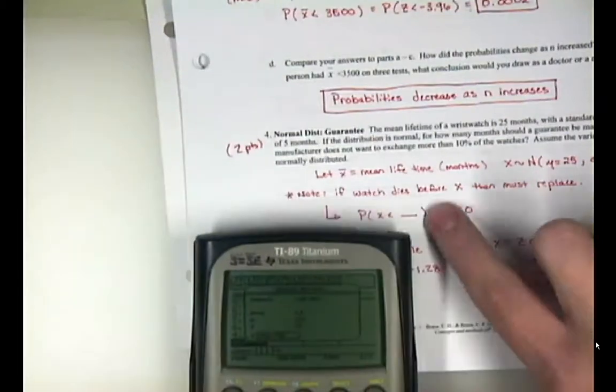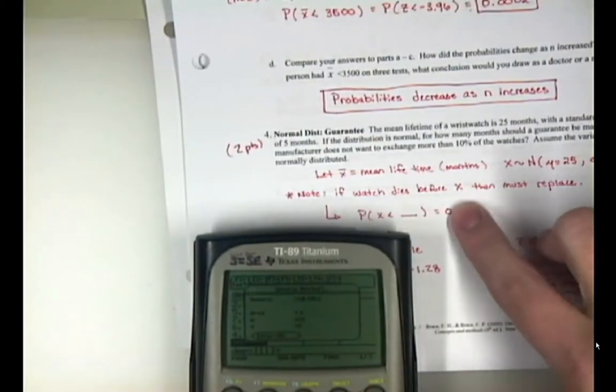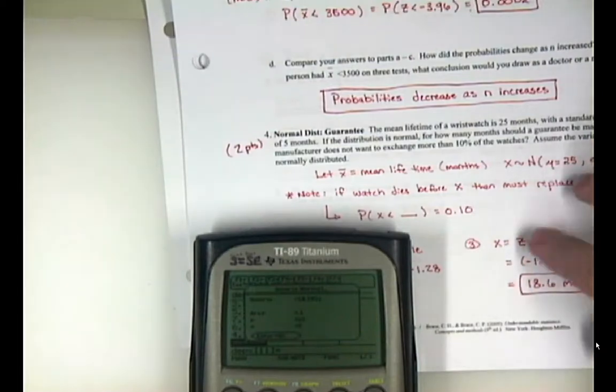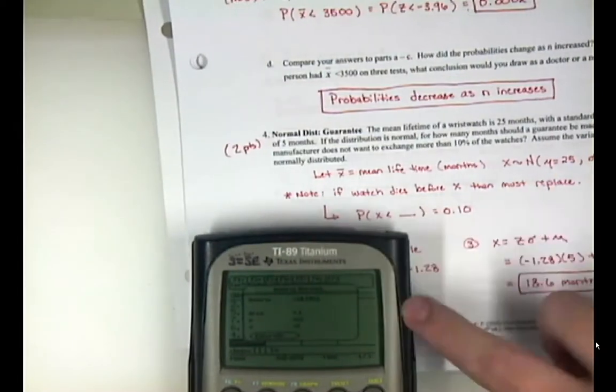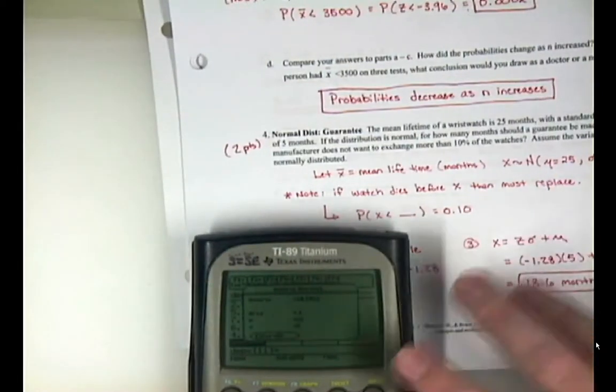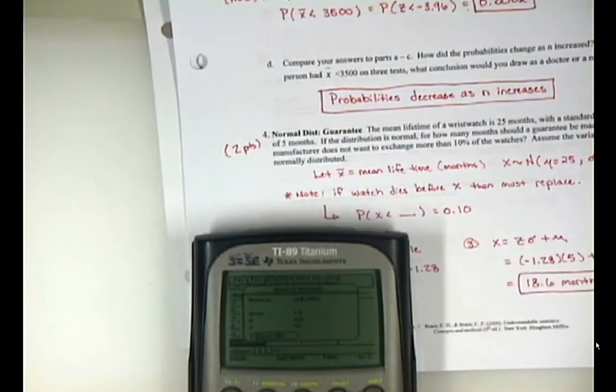as long as you can set it up and you know what the shaded area is, and you know your mean and you know your standard deviation, it's going to calculate that raw score for you in just a matter of seconds. It's just a really cool function in the normal, in the TI-89 Titaniums.